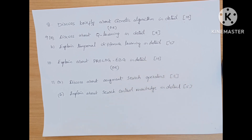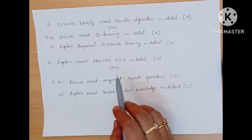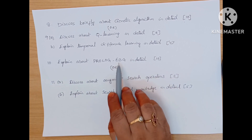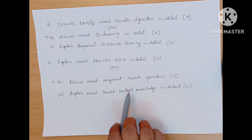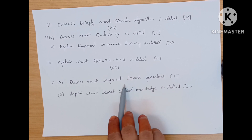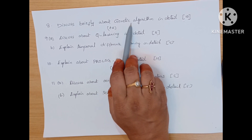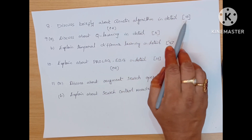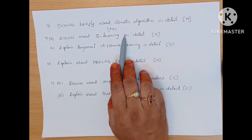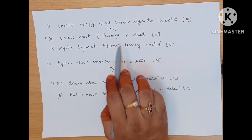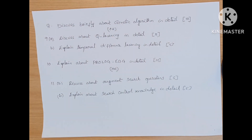If you observe this paper, all the first A bits across each and every unit have either a direct question or internal choice. The first bit is a direct 10 marks question, and the B bit is divided into 2 parts as internal choice. Similarly here, Unit 4's 8th question is a direct 10 marks question, but the internal choice is again divided into 2 parts. Like this, you have to read these questions.